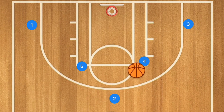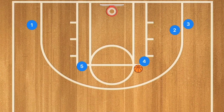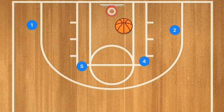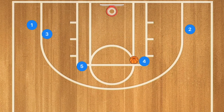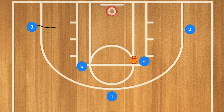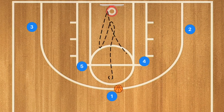If Player 2 passes to Player 4, Player 4 would go set a screen on Player 3. Player 3 then has the option to cut towards the rim and could be open for the layup. If not, Player 3 goes and sets a screen on Player 1's man. Player 1 pops up to the top and we reset the motion. Of course, he could take that shot as well.